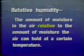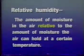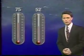Our topic today is relative humidity. Simply put, relative humidity is the amount of moisture in the air relative to the amount of moisture the air can hold at a given temperature. For example, with an air temperature of 75 degrees and a dew point temperature of 52 degrees — the temperature at which saturation occurs — the relative humidity runs at about 45 percent.